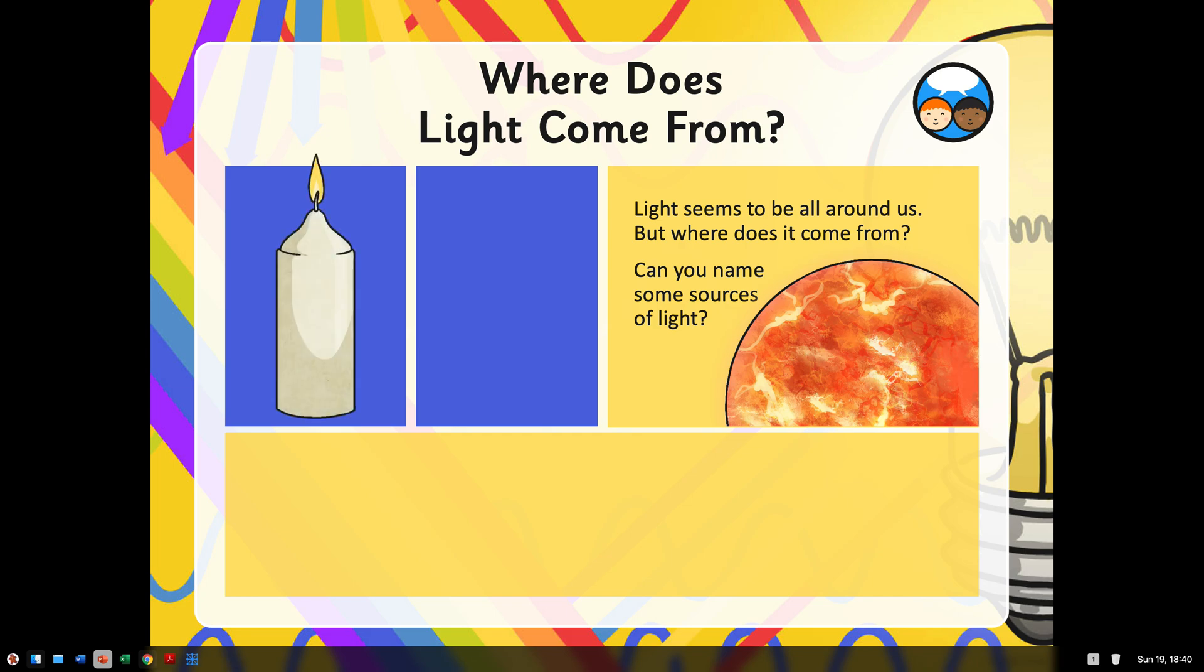We've also got candle. Now, fire is an actual source of light, but obviously if we light a candle, we are producing that light. And then you've got light bulbs, which are an artificial source of light. That means man-made.